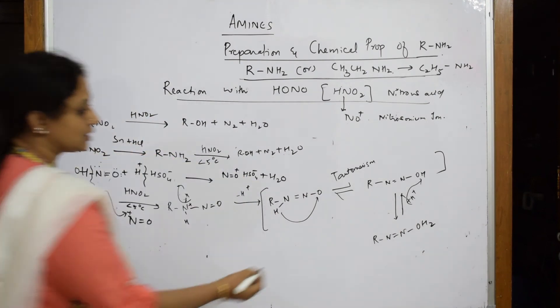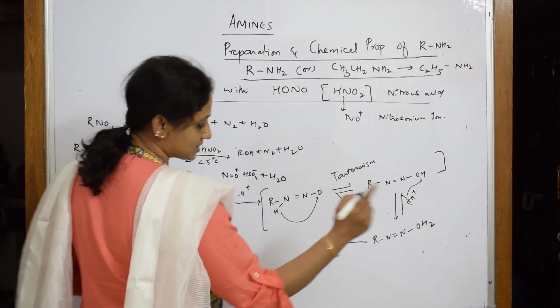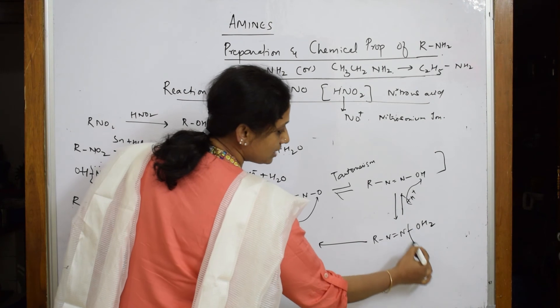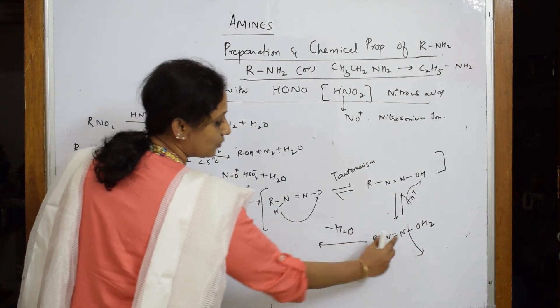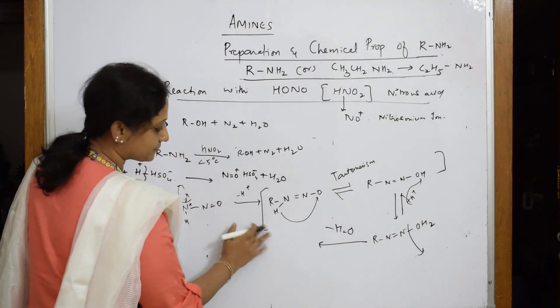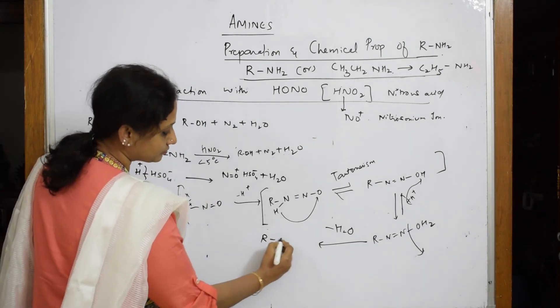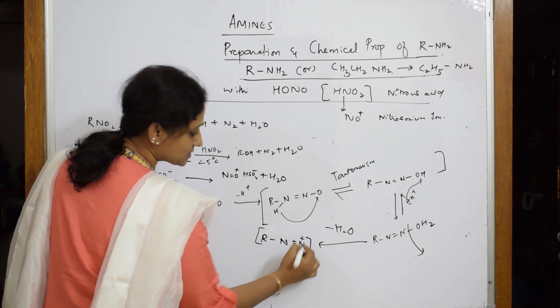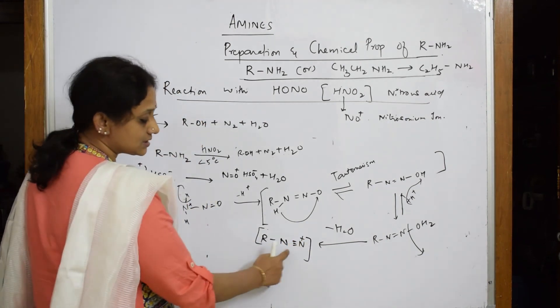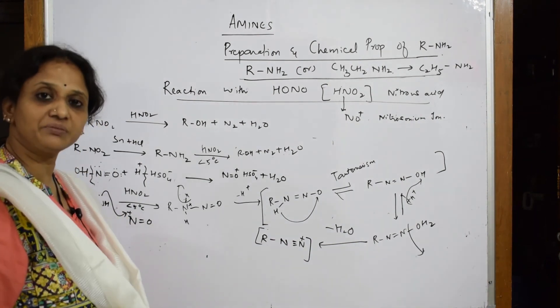Now when I take this, there's a cleavage of the bond here, minus water. So what am I left with? I'm left with R-N≡N+. This is a cation - diazonium cation.